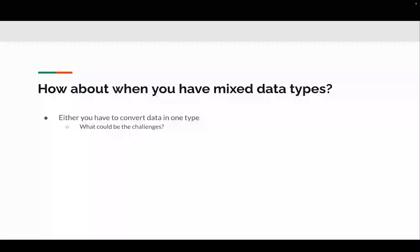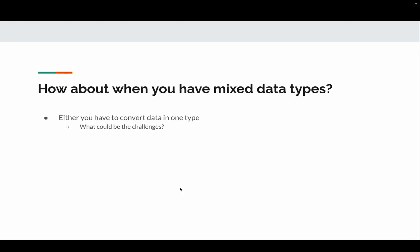What if we have mixed data where features include both categorical and numeric values? One approach is to convert all features into one type. You might convert categorical features to numeric using encodings like one-hot encoding, or you can convert numeric data into categorical by binning — for example, grouping ages into ranges like 0–10, 10–20, and so on. Either way, you convert all features into one type and then apply k-means or k-modes.